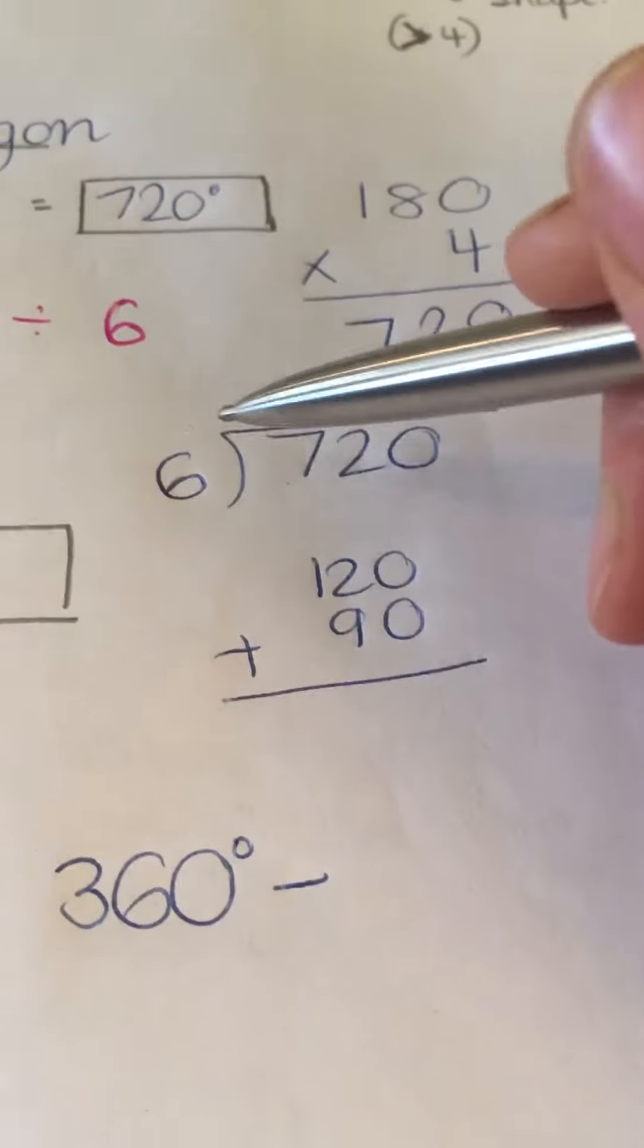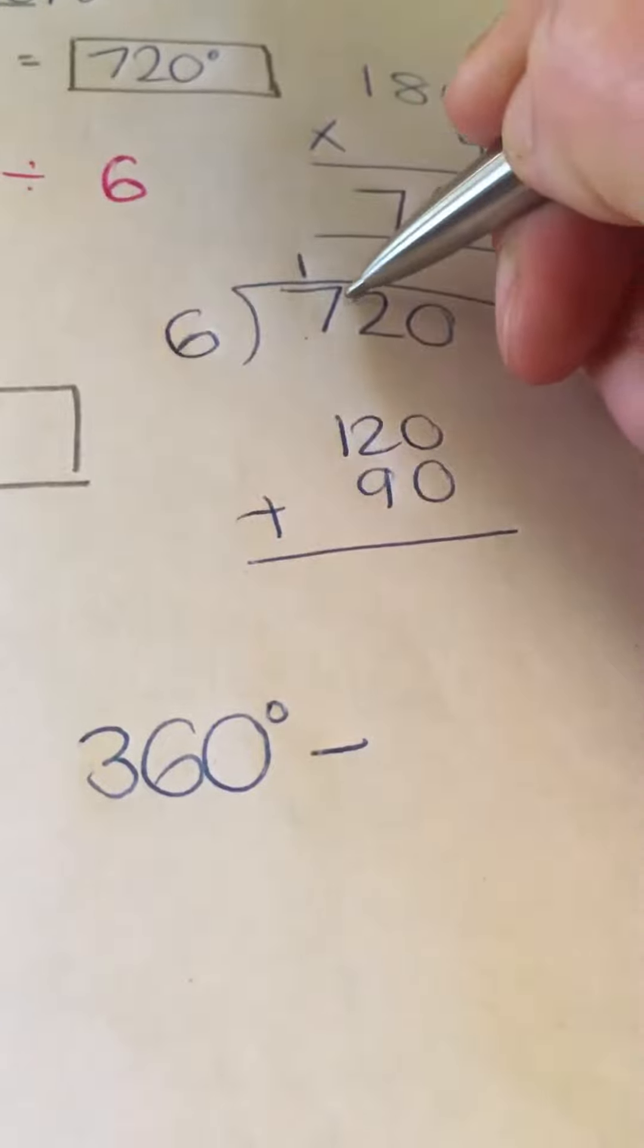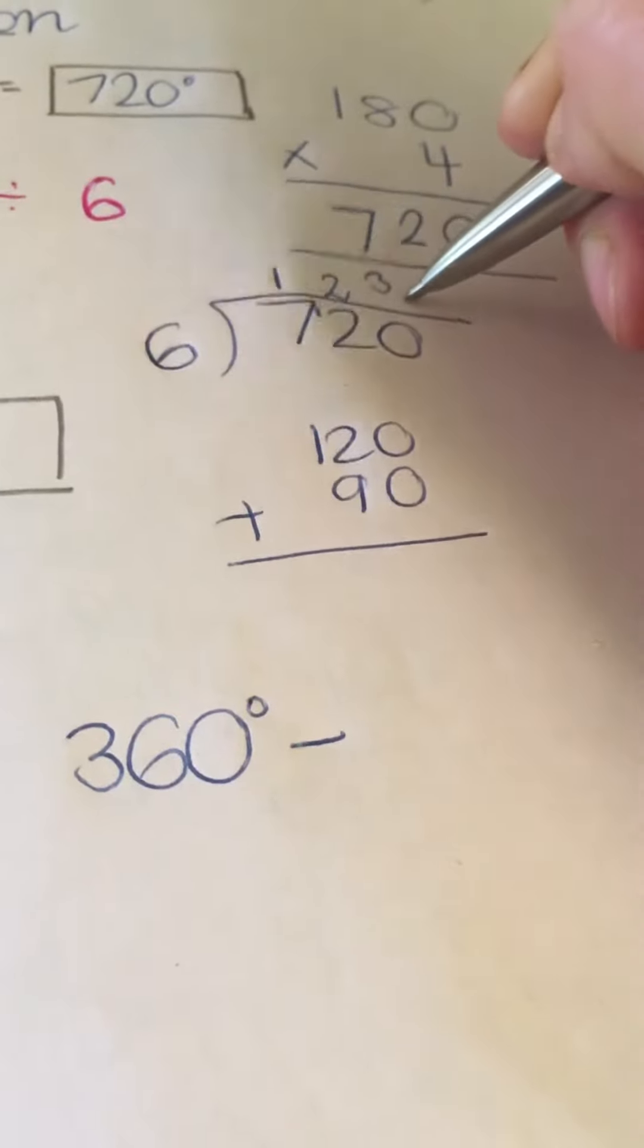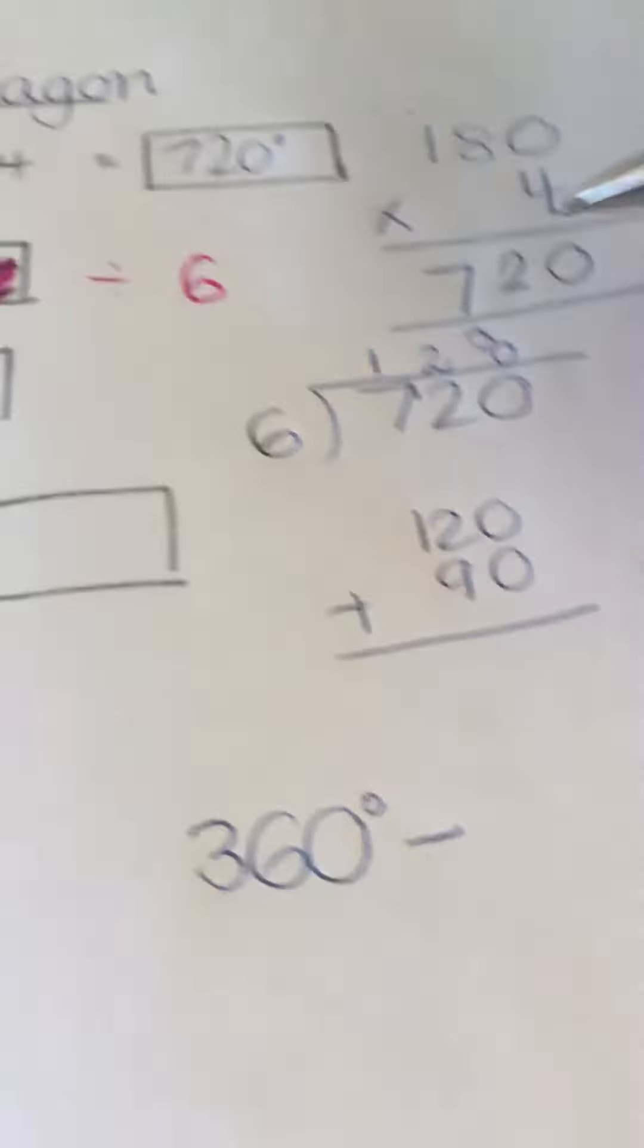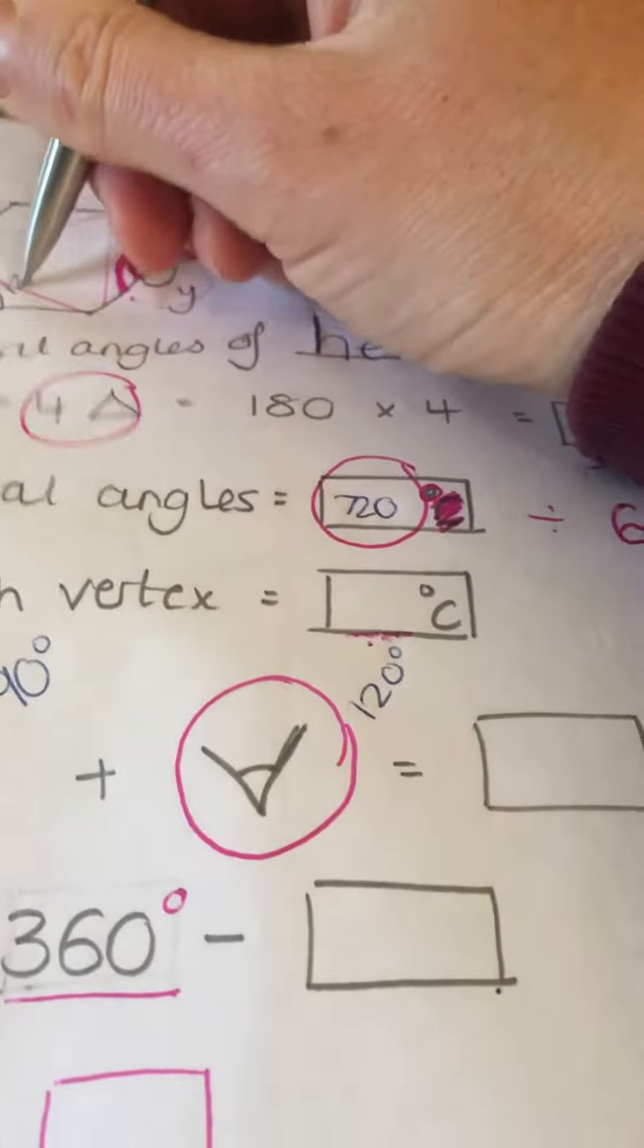So, I do 720 divided by 6. How many 6's go into 7? 1 with a remainder of 1. How many 6's into 12? 2, no remainder. 0, 6 is in 0, so it's 120. So, each vertex, this is 120.